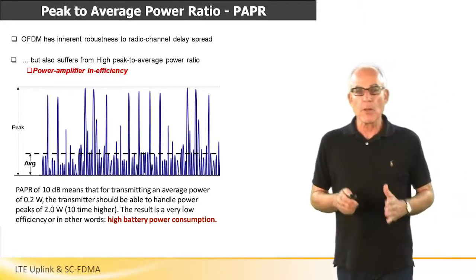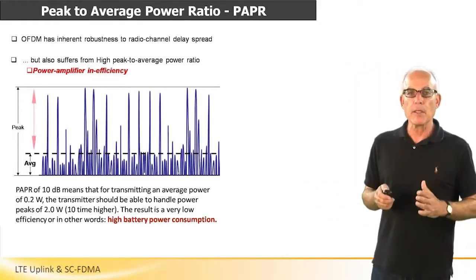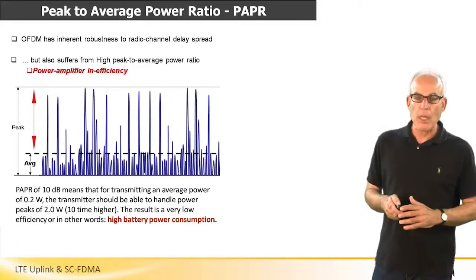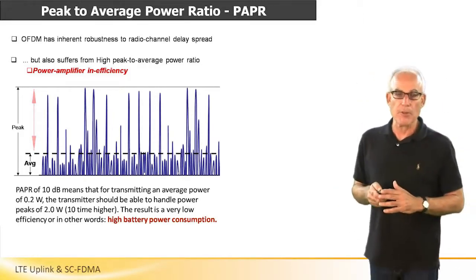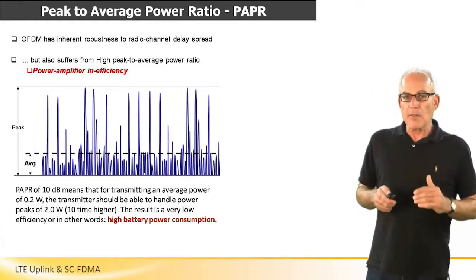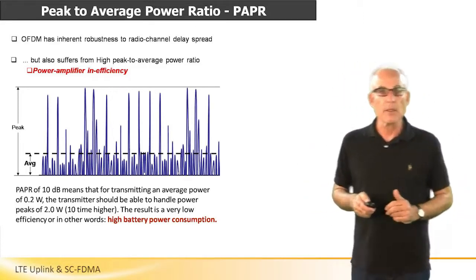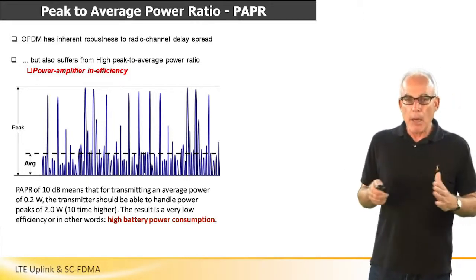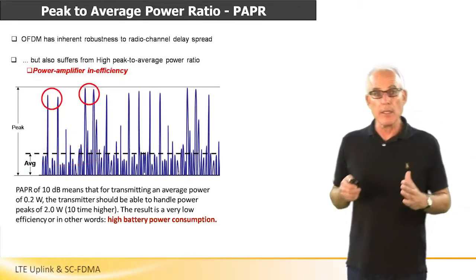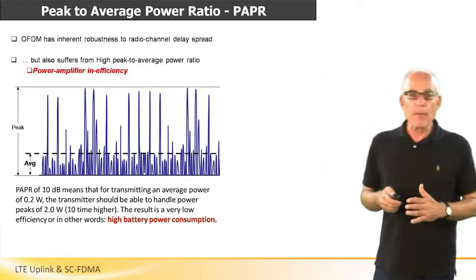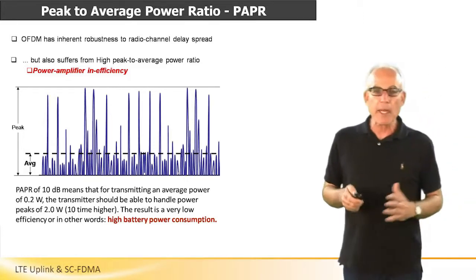But OFDM also has a significant disadvantage: the relatively high peak-to-average power ratio. In order to understand what peak-to-average power ratio is, we should look at the following figure, which describes the momentary power emitted from the OFDMA transmitter. In OFDMA, the typical peak-to-average power ratio is in the magnitude of 10 dB.